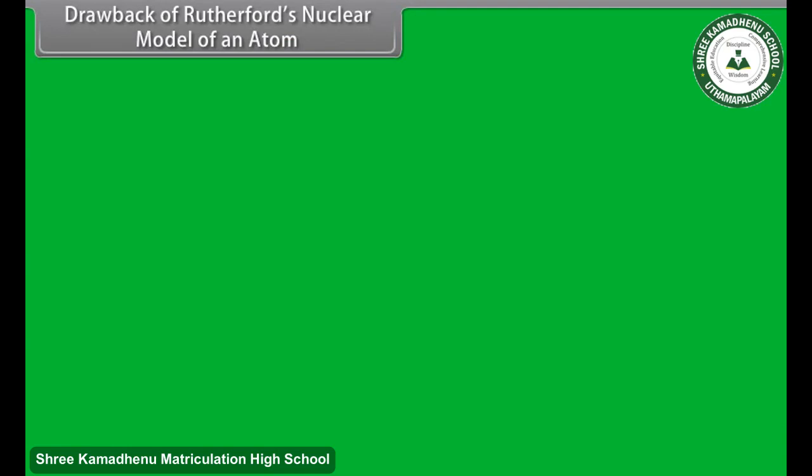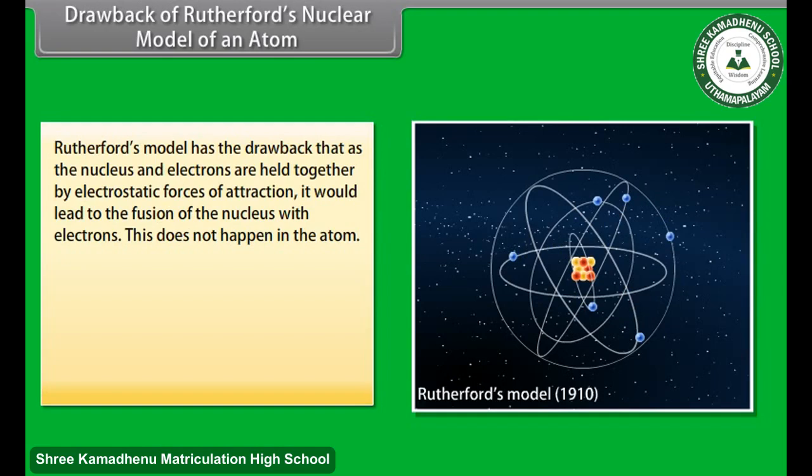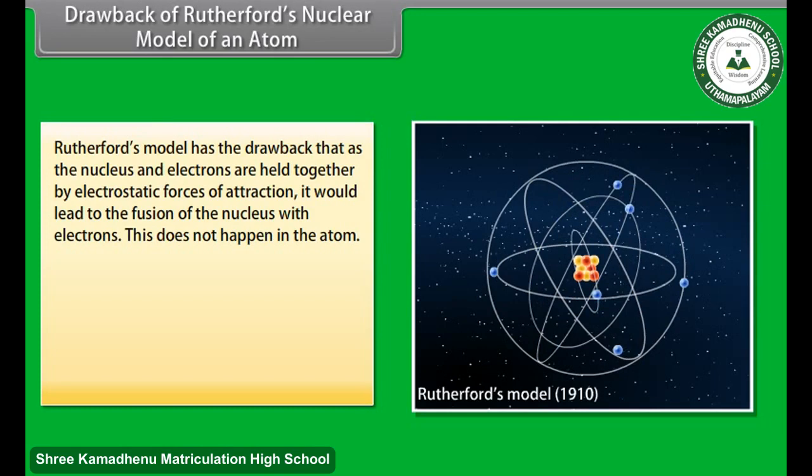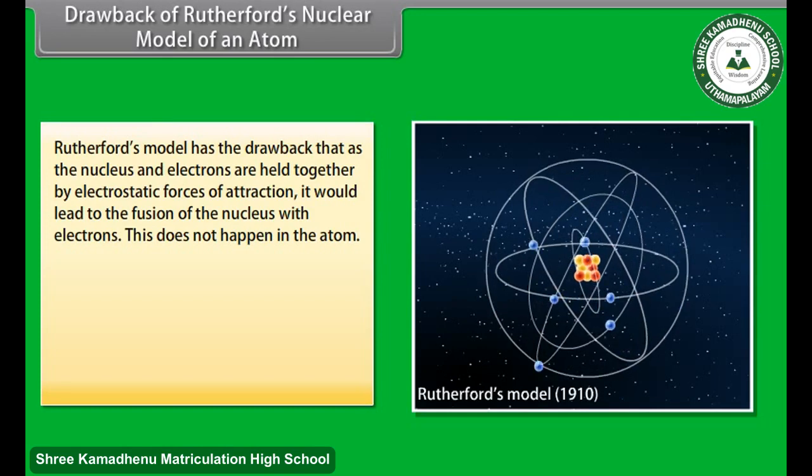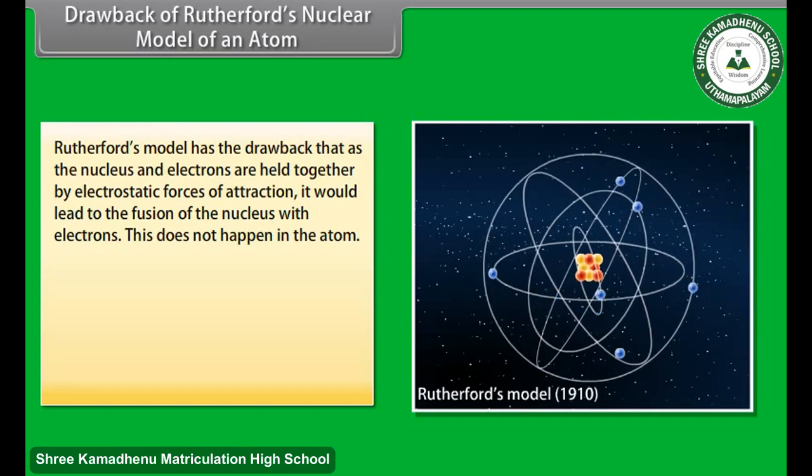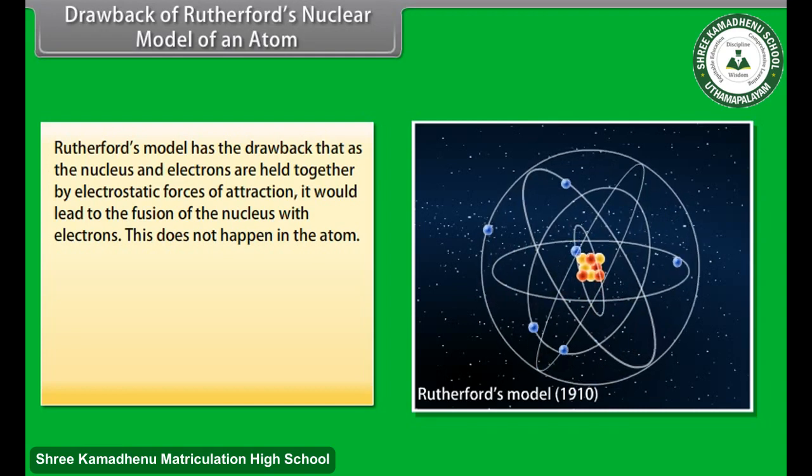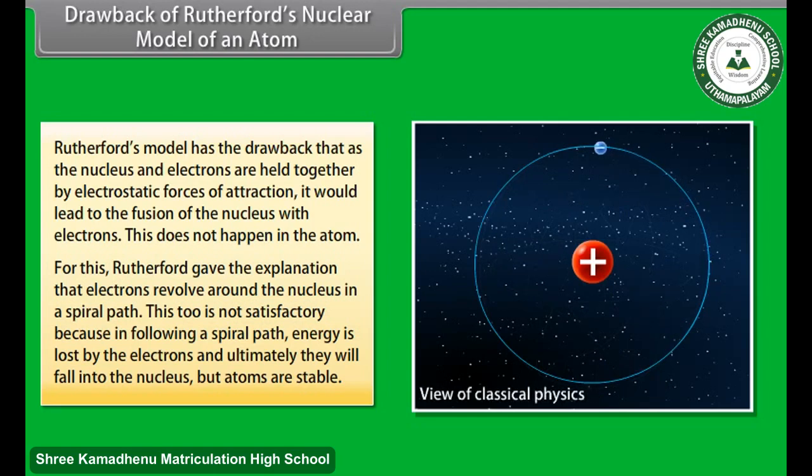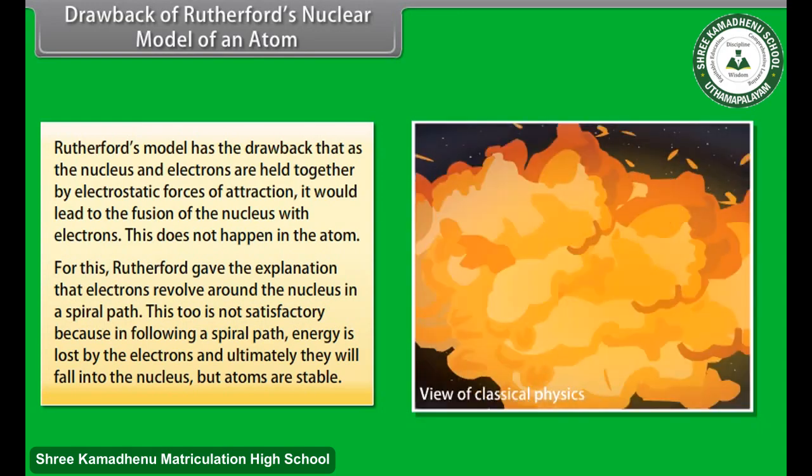Drawback of Rutherford's Nuclear Model of an Atom. Rutherford's model has the drawback that as the nucleus and electrons are held together by electrostatic forces of attraction, it would lead to the fusion of the nucleus with electrons. This does not happen in the atom. For this, Rutherford gave the explanation that electrons revolve around the nucleus in a spiral path. This, too, is not satisfactory because in following a spiral path, energy is lost by the electrons and ultimately they will fall into the nucleus, but atoms are stable.